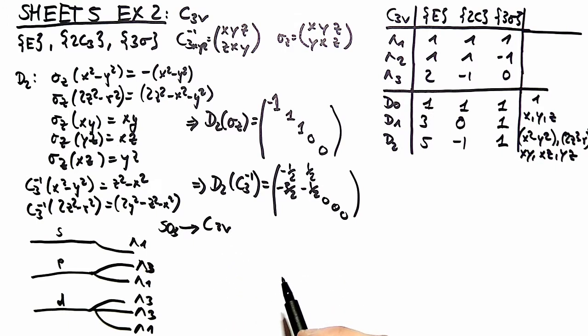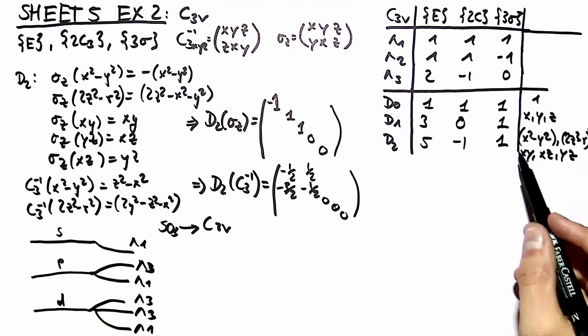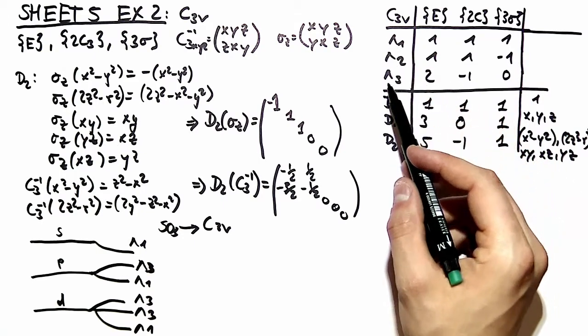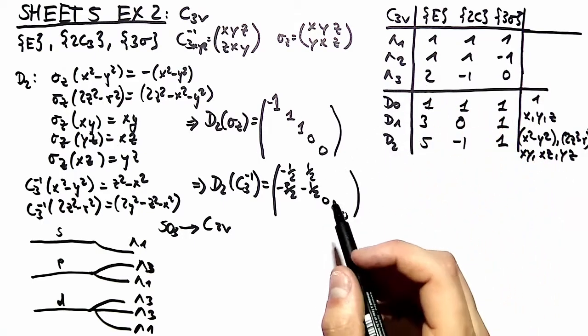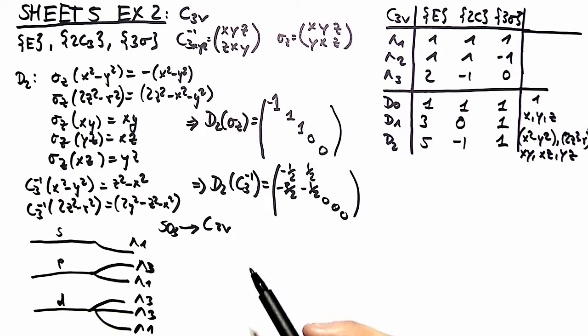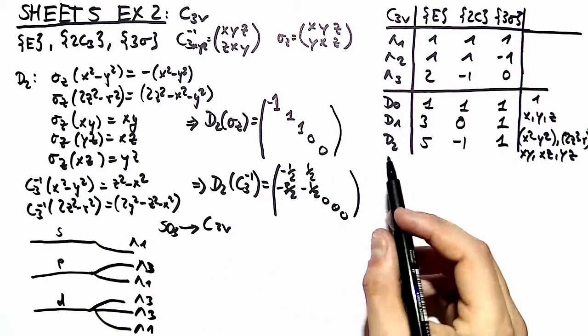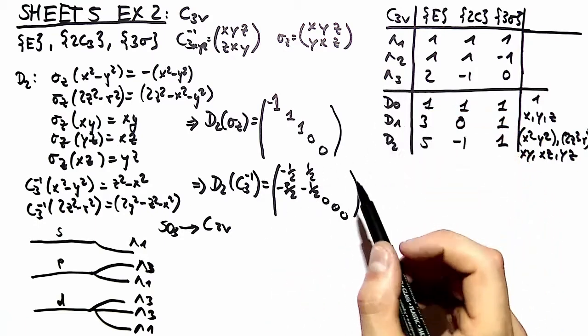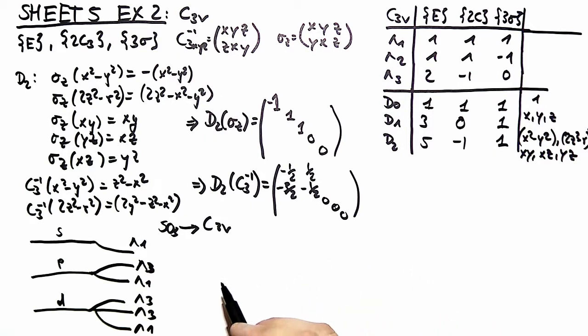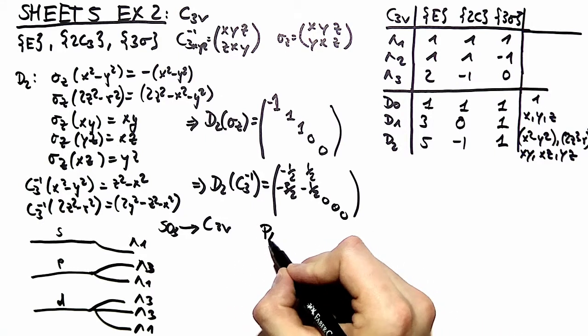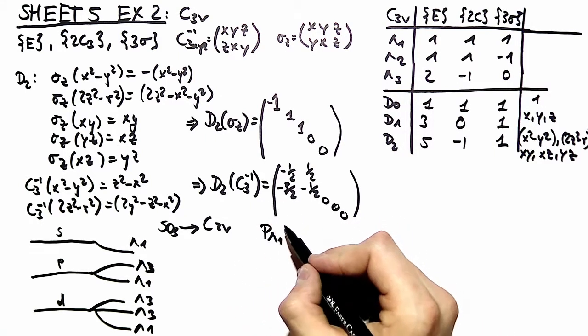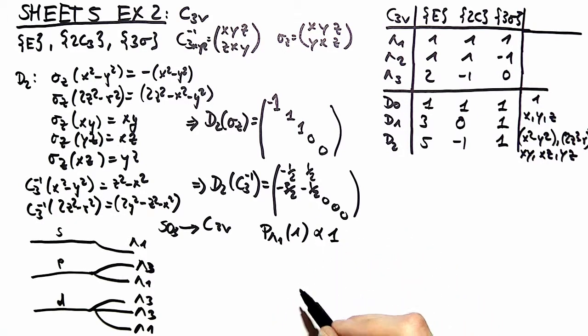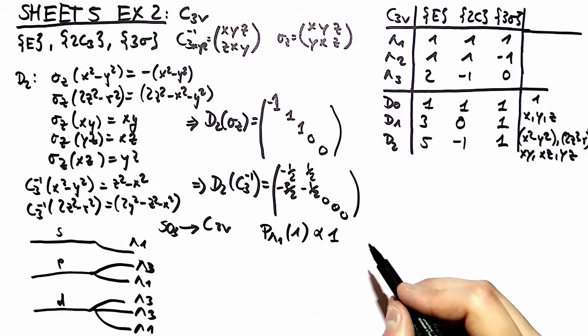At the next step we want to project the basis functions into the subspace of the irreducible representations. So the aim is to know which polynomials of x, y and z live in which of these representations. So the easiest thing first, we project into lambda 1 our basis function 1, and this is of course 1.